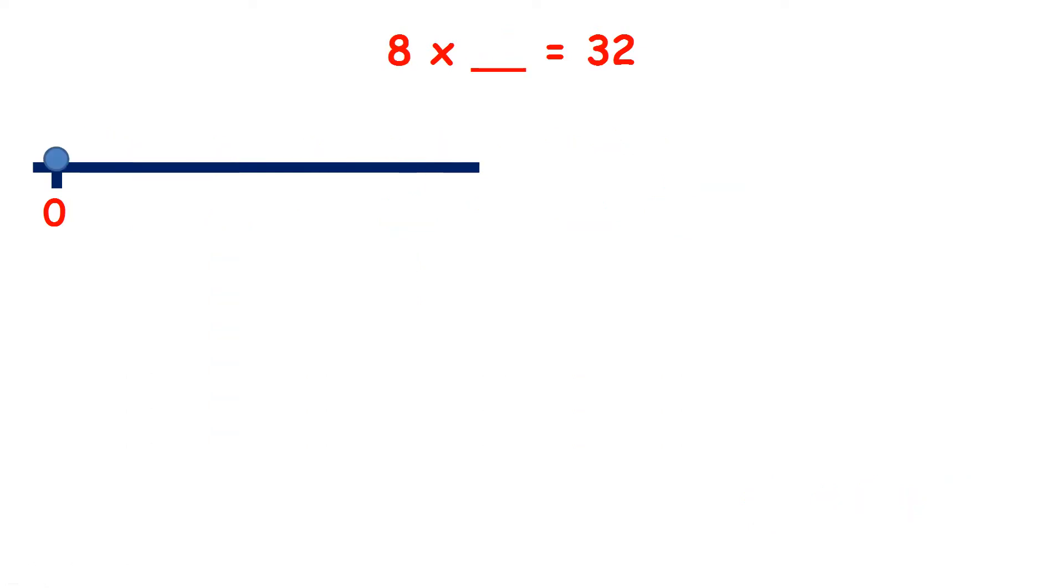Now we have 8 times something equals 32. What is our missing number here? Well, let's count in steps of 8 until we get to 32.